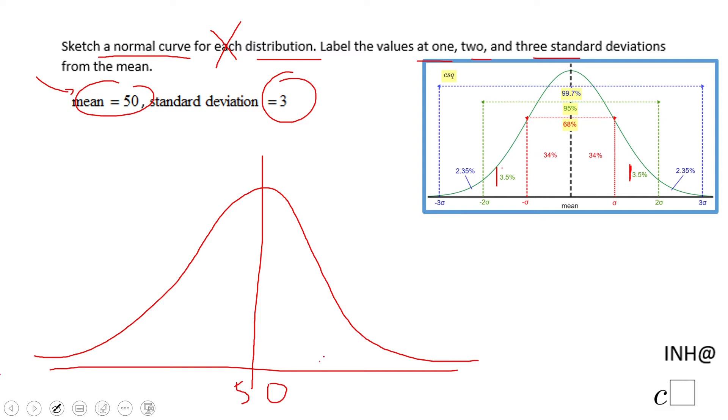3 and you get 53. Subtract 3 and you're going to get 47. That's it. Between 47 and 53 you have 68 percent of the data. But then I'm going to add 3 more.